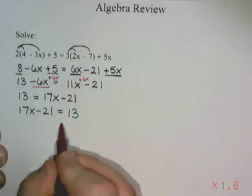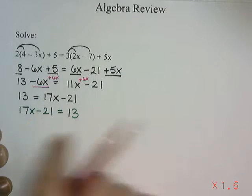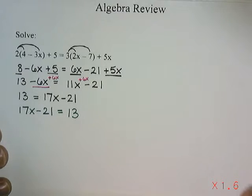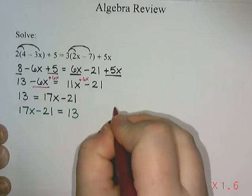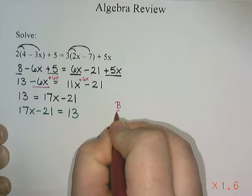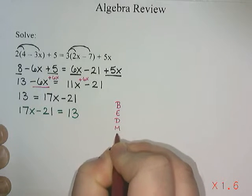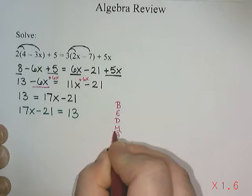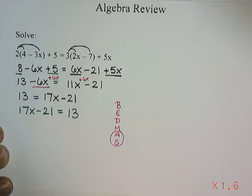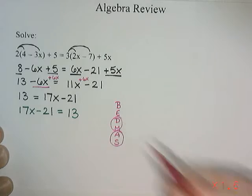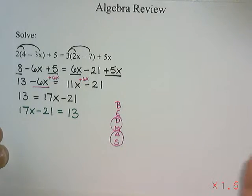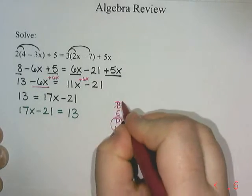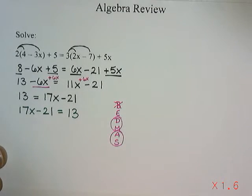So I have 17x minus 21 equals 13. When we start rearranging to solve and isolate for x, what we try to do is use the order of operations, or BEDMAS, backwards. Which means the first thing that we try to move is any addition or subtraction we might have, and then division and multiplication, and then exponents and brackets. But we tend to usually multiply the brackets out, so that's not a problem.